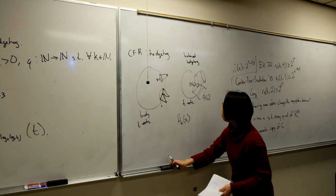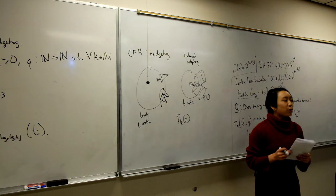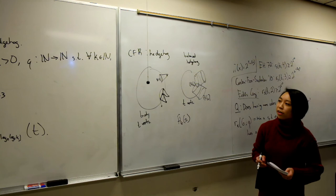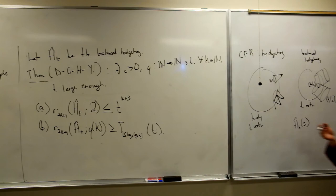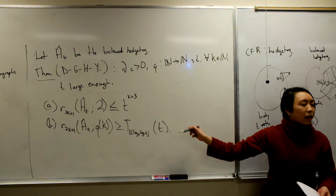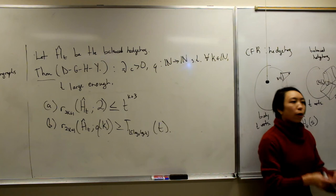That's the hedgehog construction. With the rest of the time I want to talk about what goes into these proofs. For part A (the upper bound), it's fairly straightforward and follows the Conlon-Fox-Sudakov paper. The main ideas I'll discuss are what went into part B, the lower bounds, going into more detail on the stepping up construction. Before I get into proofs, are there any questions?